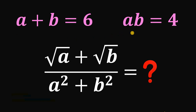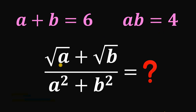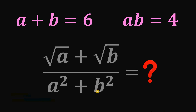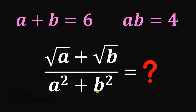If a plus b equals 6 and a times b equals 4, then our goal is to find the numerical value of square root of a plus square root of b, all over a squared plus b squared. Pause the video right now and see if you can answer this question.